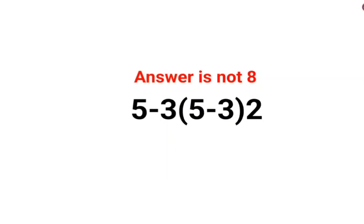Welcome everyone. Many people thought that the answer for this one is supposed to be 8 because 5 minus 3 is 2, 5 minus 3 is 2, so 2 multiplied by 2 multiplied by 2.